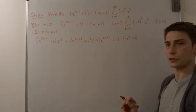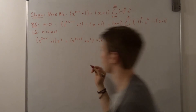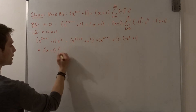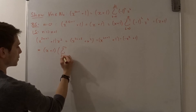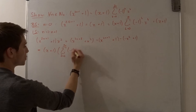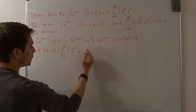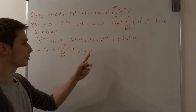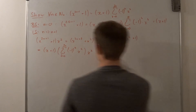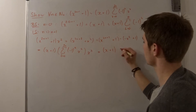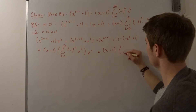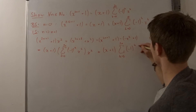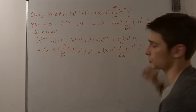Now we are going to multiply x squared on the right side using our inductive hypothesis. So this is equal to x plus 1 times the sum from k equals 0 to 2n of minus 1 to the k-th power times x to the k-th power, times x squared — which gives x to the k plus 2 power. We can distribute this x squared into the sum, giving x plus 1 times the sum from k equals 0 to 2n of minus 1 to the k-th power times x to the k plus 2 power.